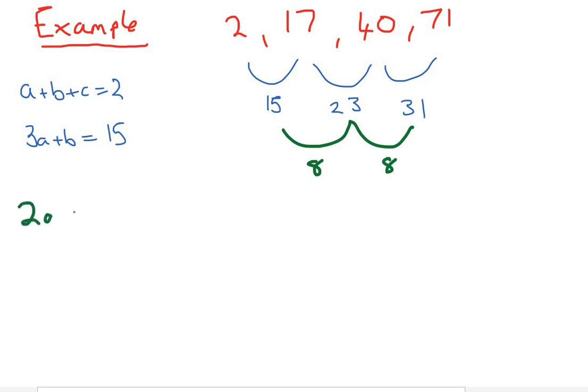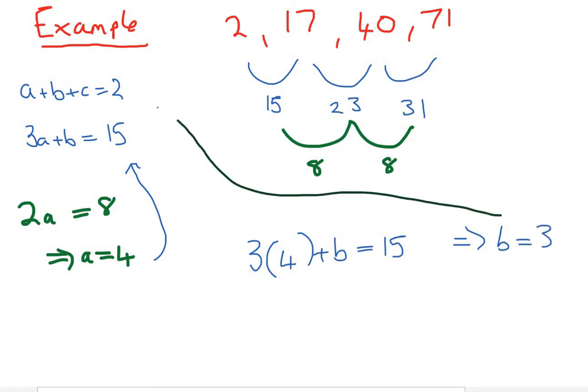our other formula said the second differences are 2a. So, 2a is 8, which implies that a equals 4. Good. So, now we can plug a equals 4 into here, and we get 3 lots of 4 plus b equals 15. And this implies that b equals 3. Excellent. Right,